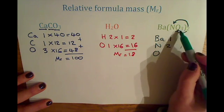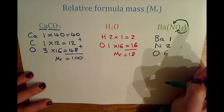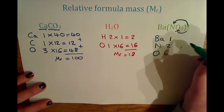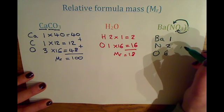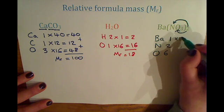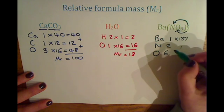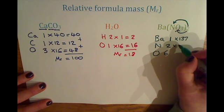So two times three is six atoms of oxygen. So looking on your periodic table to find the relative atomic masses, you'll see that the relative atomic mass of barium is 137, the relative atomic mass of nitrogen is 14.